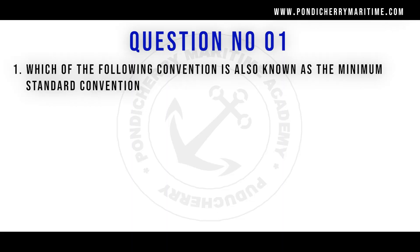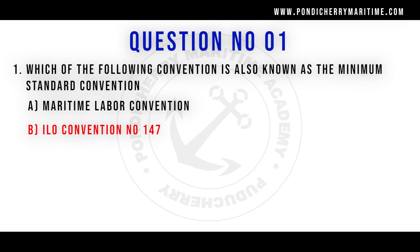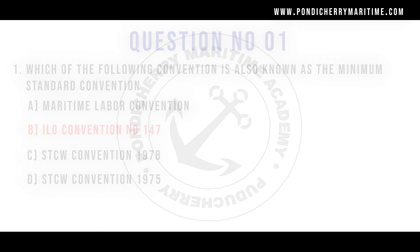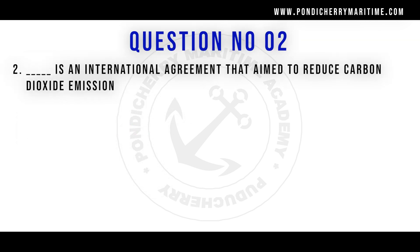Question number one: Which of the following conventions is also known as the minimum standard convention? Option A: MLC. Option B: ILO Convention Number 147. Option C: STCW Convention 1978. Option D: STCW Convention 1975. Option D, STCW Convention 1975, is not a real convention. The correct answer is Option B, ILO Convention Number 147.